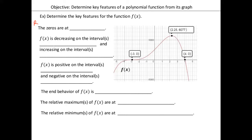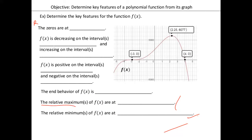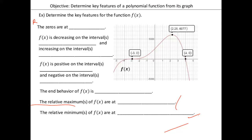So Daniela, can you tell me what are the zeros here? You're not sure? Jose Gonzalez, can you help her out? Negative three and four — negative three and four. Good. It's the two points that are touching the x-axis. So if you remember, it's the ones that touch the x-axis. So my x-axis is here, and my two points are negative three and four. So the zeros are crossing or touching the x-axis. And remember, it's only the x-values.